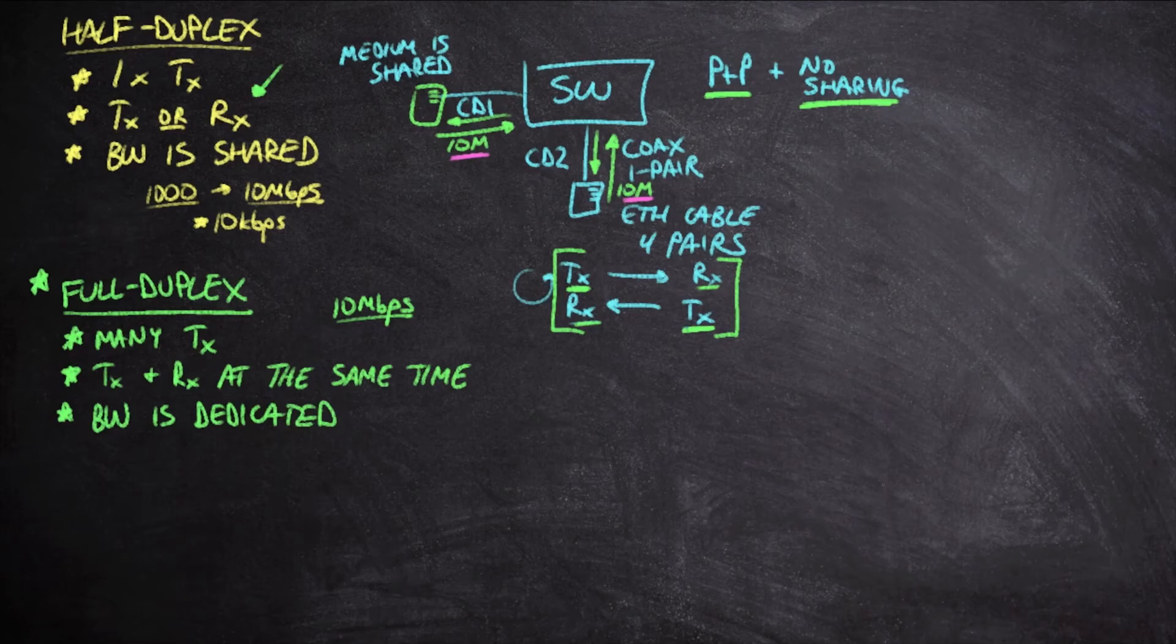So now life is grand and we can speak 10 megabits per second in both directions at all times, right? Unfortunately, that's not the case. 10 megabit per second doesn't actually allow for full duplex communications like this. Let's dive into the details here.